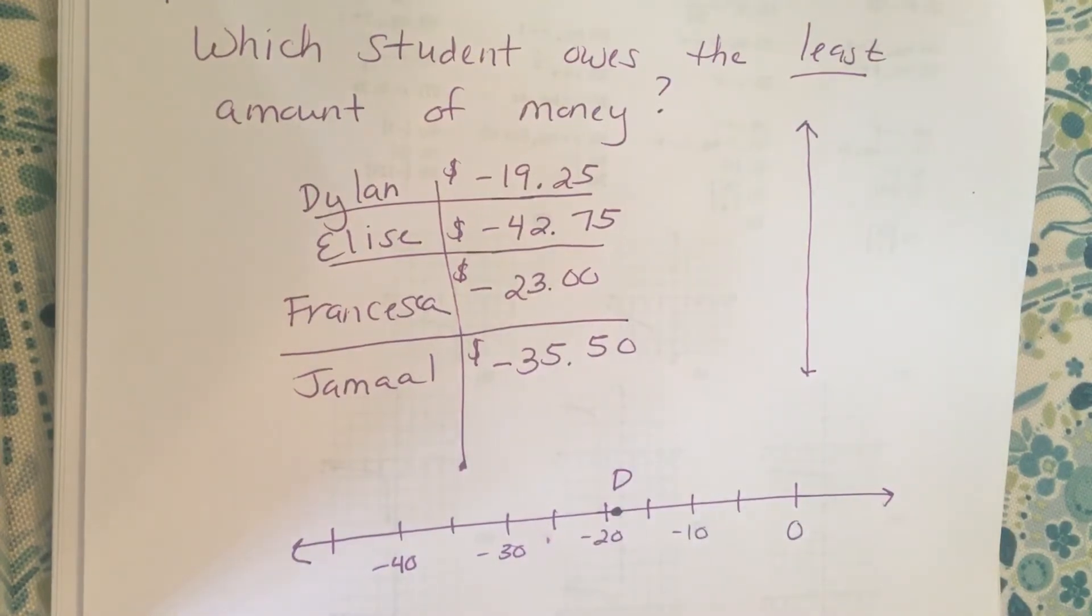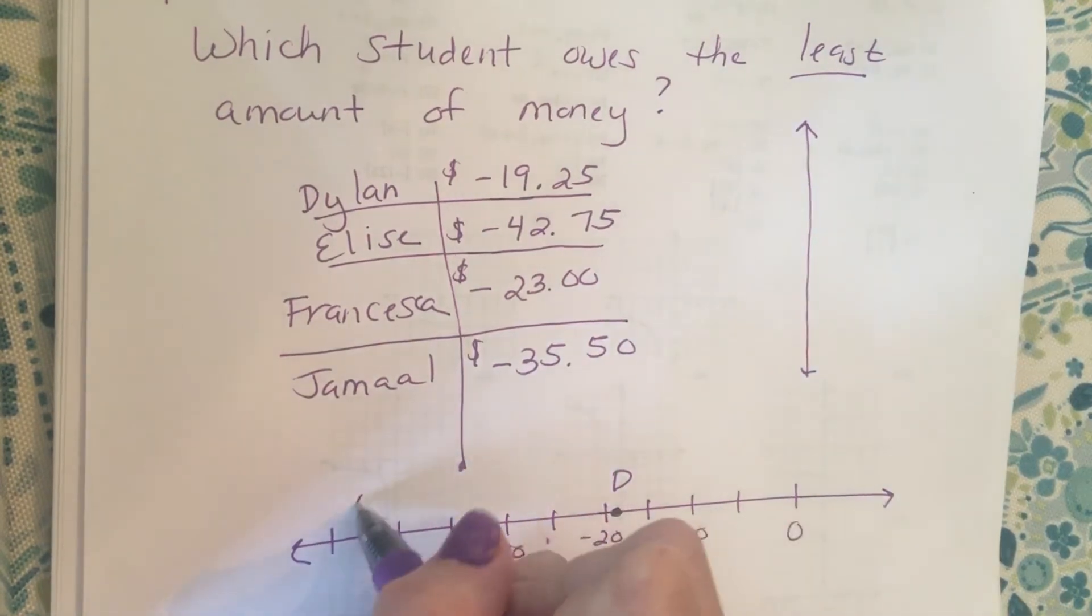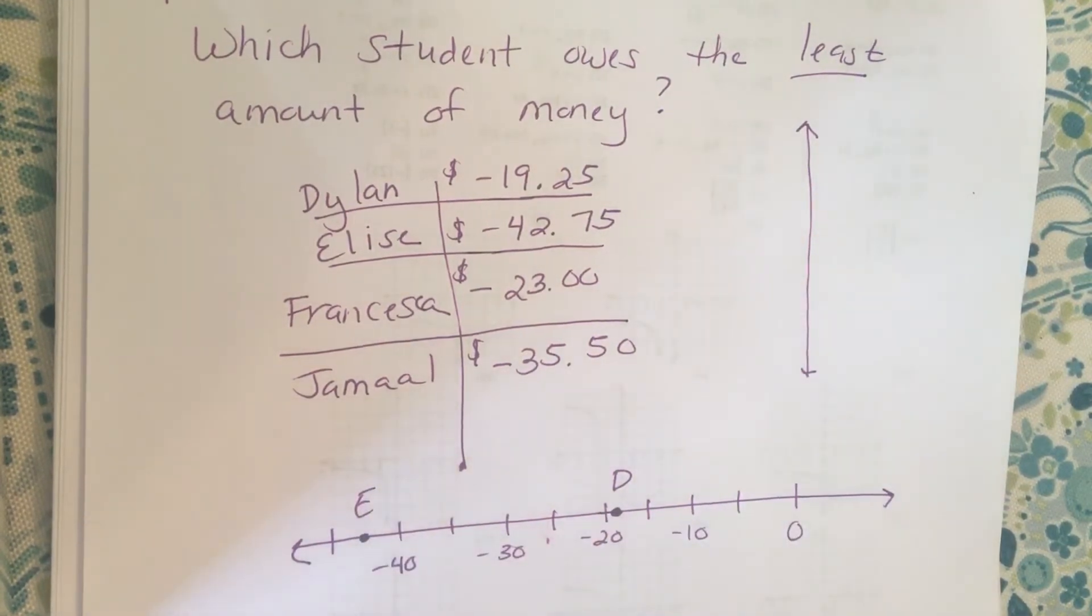Elise owes 42 dollars and 75 cents, so that's going to be here, almost right in between negative 40 and negative 45, and I'll put an E for Elise. Francesca owes 23 dollars, so that's going to be in between negative 20 and negative 25. So here's Francesca.